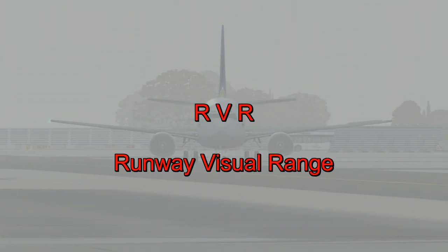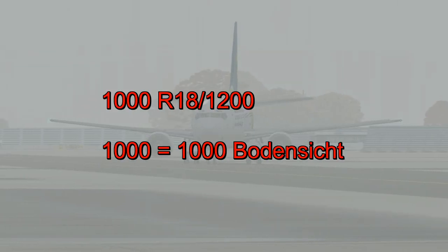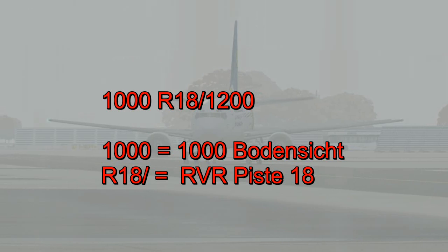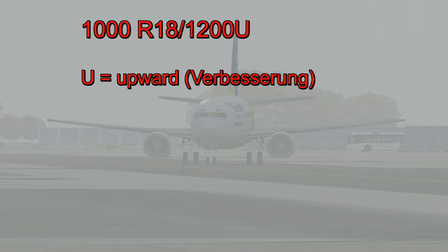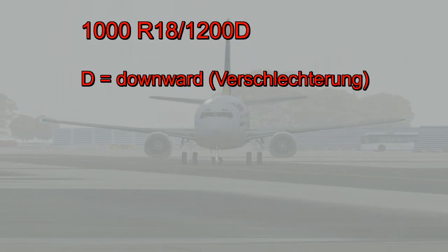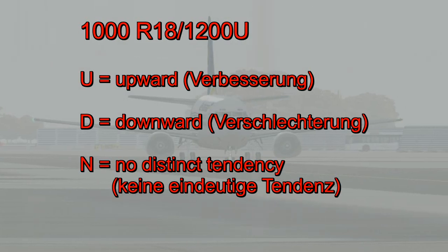Bei Sichten unter 1500 Metern wird zusätzlich eine Pistensichtweite RVR für Runway Visual Range gemessen. Die Pistensichtweite wird mit dem Kennbuchstaben R, der dazugehörigen Piste und der festgestellten Pistensichtweite hinter der Bodensicht angegeben. Durch das Anfügen der Buchstaben U für Upward (Verbesserung), D für Downward (Verschlechterung) oder N für No Distinct Tendency (keine eindeutige Tendenz) kann der Trend bei der Veränderung der Pistensicht in den letzten 10 Minuten angezeigt werden.